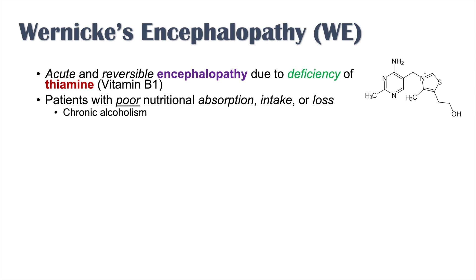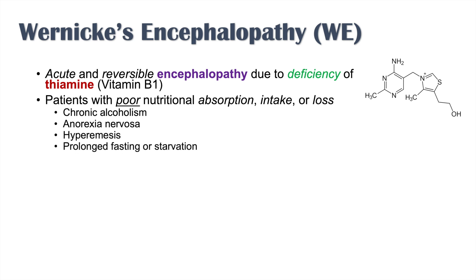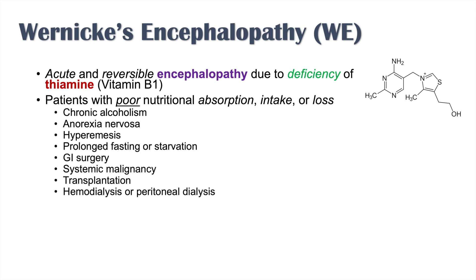The most common cause you're likely to come across is chronic alcoholism. Individuals who drink a lot oftentimes don't have proper intake or absorption of vitamin B1. However, you can also see this condition in eating disorders like anorexia nervosa, hyperemesis of pregnancy, prolonged fasting or starvation, GI surgery, systemic malignancy, transplantation, hemodialysis or peritoneal dialysis, and in patients with AIDS.